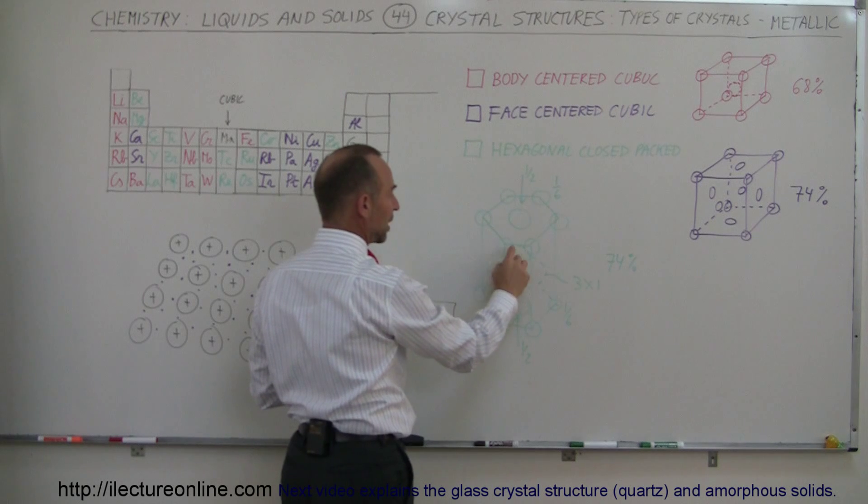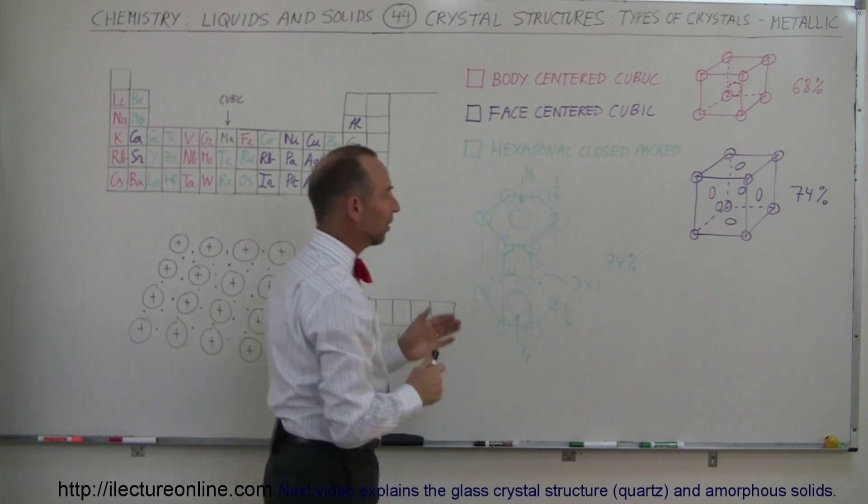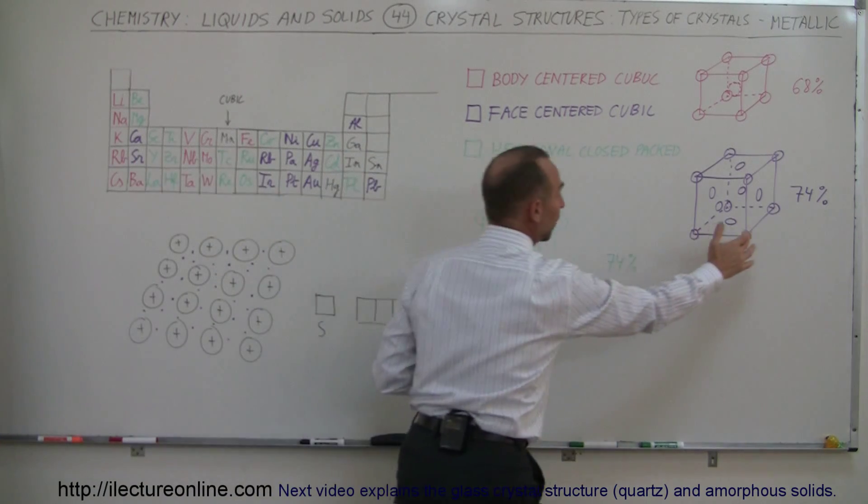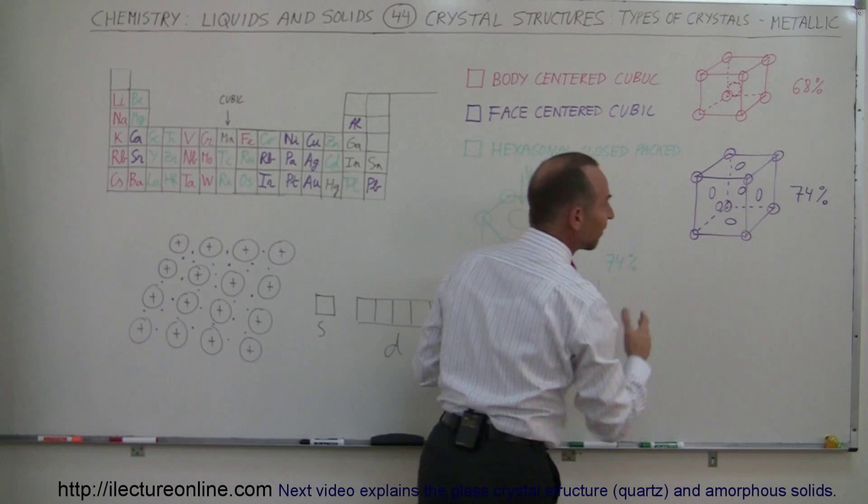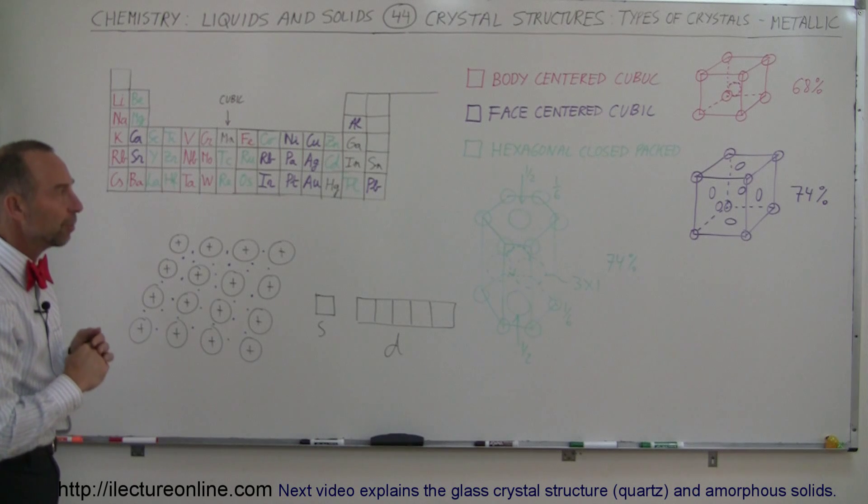And then there's three complete atoms completely enclosed by this hexagonal structure. So in total there will be six total atoms in one of those structures. Also, these two are about the same amount filled, about 74% of the total volume is filled by the actual atoms, with only about 26% of free space.